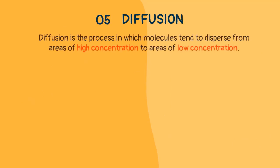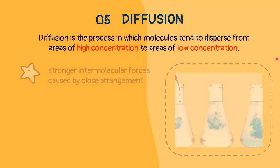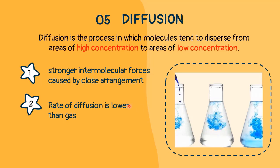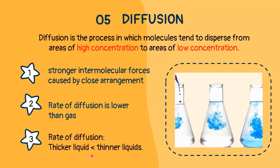Diffusion is a process in which molecules tend to disperse from areas of high concentration to areas of low concentration. The molecules in liquid are much closer together than those in gas. Their close proximity and the lack of available space makes it harder for them to disperse across an area and slows down their rate of diffusion. Other factors that affect the rate of diffusion include thickness or viscosity, so thicker liquids tend to have a slower rate of diffusion than thinner liquids.